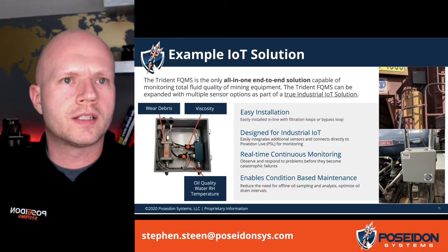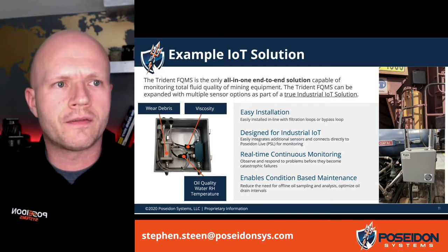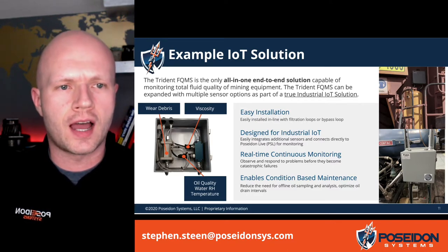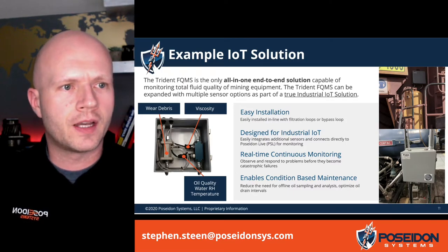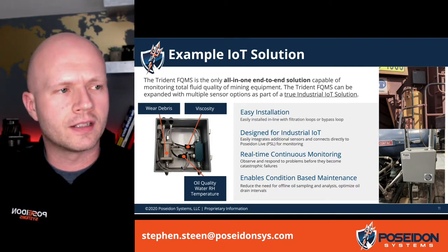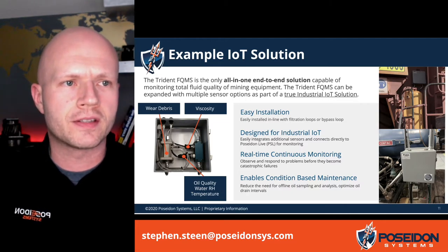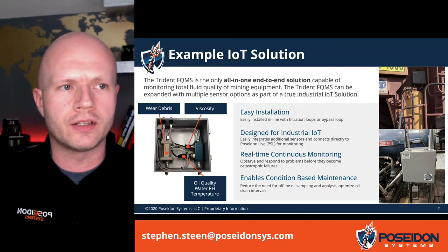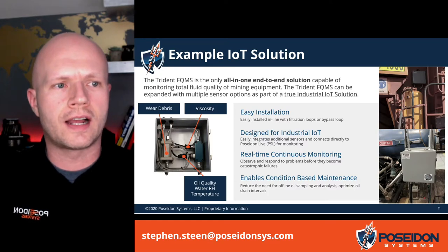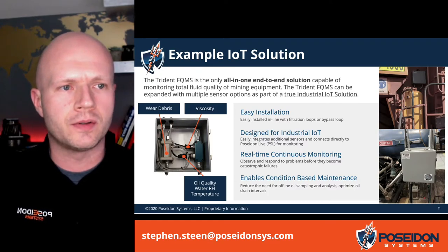I want to give you an example of what one of these solutions may look like. This is ours — we call it the FQMS, the Fluid Quality Monitoring System. You can see it comes with several sensors: a wear debris sensor, viscometer, oil quality sensor, and direct output of water relative humidity from the oil and temperature of the fluid. On the right hand side you can see a couple of examples — one is an installation on a haul truck, the other on a stationary piece of equipment. It's relatively easy to install, with one inlet and one outlet for fluid. It is designed for industrial IoT with a data logger and multiple ways of communicating back to the software, and can be integrated into your own data system while supporting continuous real-time monitoring.